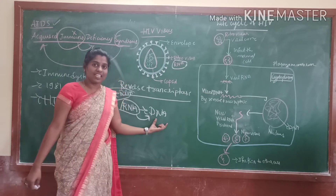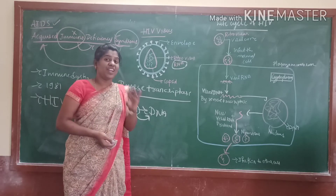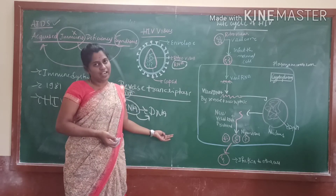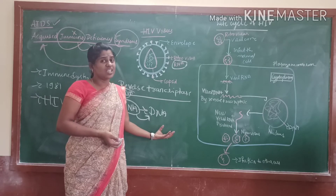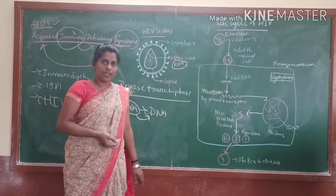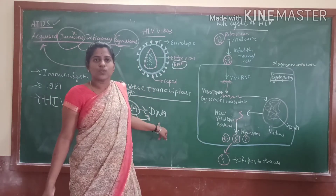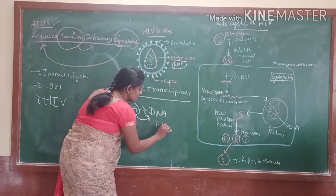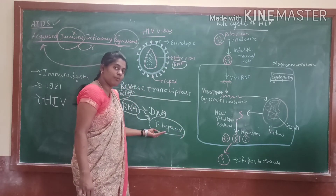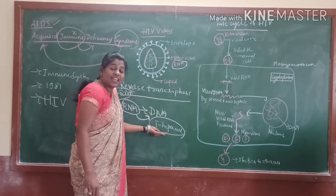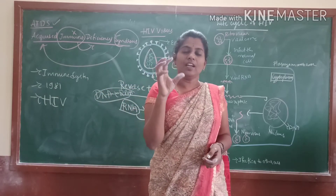And due to this DNA, when it is secreted in our body, our lymphatic cells fail to recognize it because they have a DNA form. Due to that DNA, they understand that this is a body cell. Due to that only, it cannot be recognized. And this virus constantly infects the T helper cells.